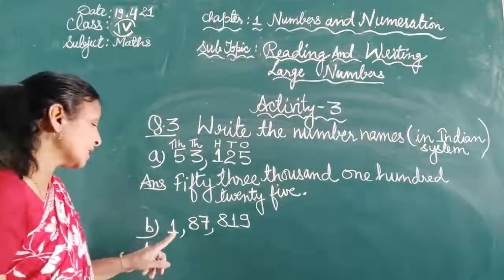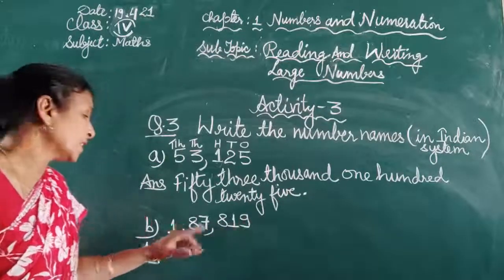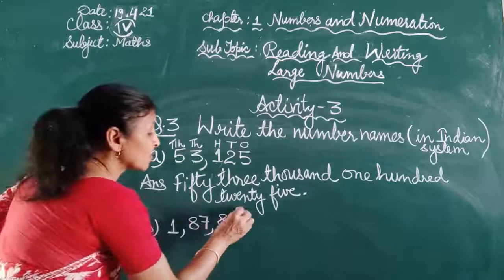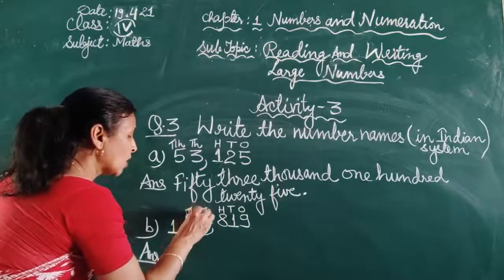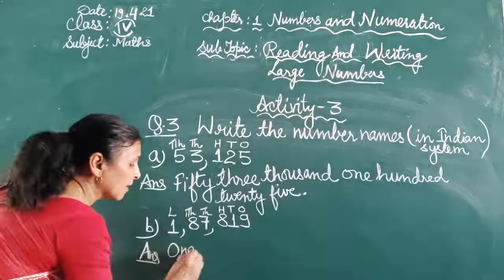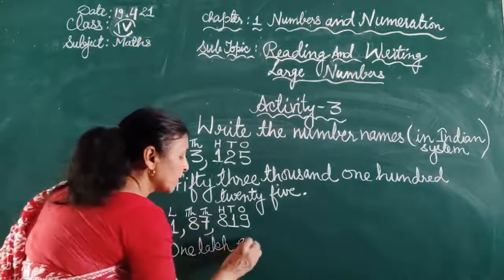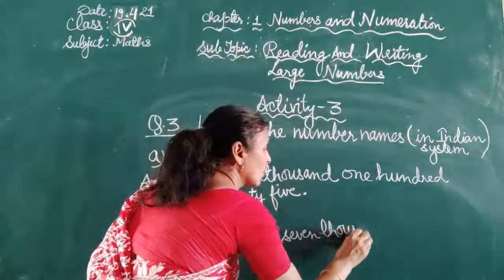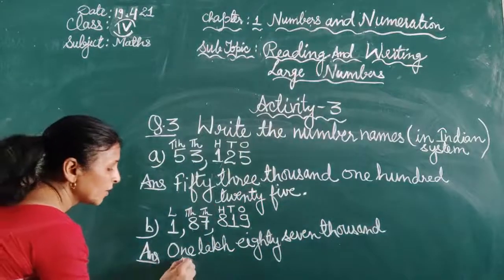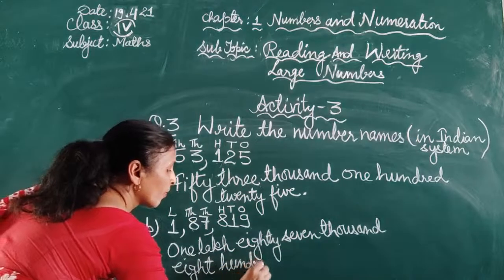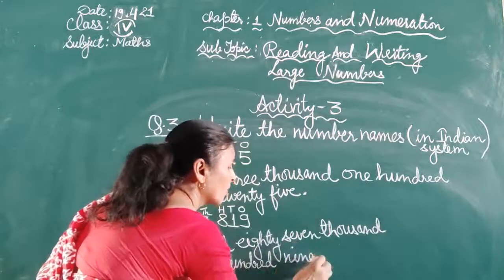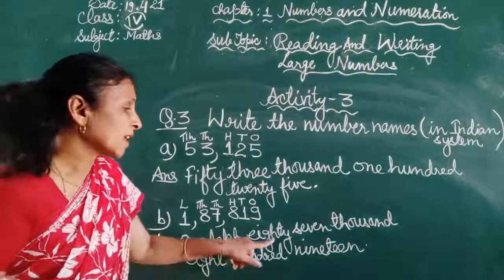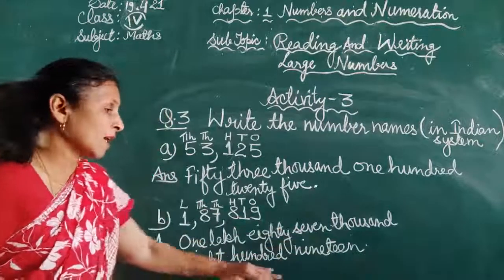The next number is 187819. We write the places: ones, tens, hundreds, thousands, ten thousands, and lakhs. Reading in words: the lakh digit is 1, giving one lakh. Then the thousands period gives eighty-seven thousand. The ones period gives eight hundred nineteen. So the complete number name is one lakh eighty-seven thousand eight hundred nineteen.